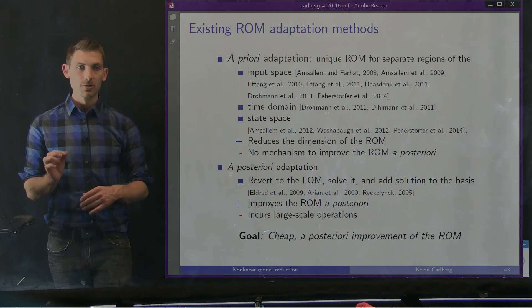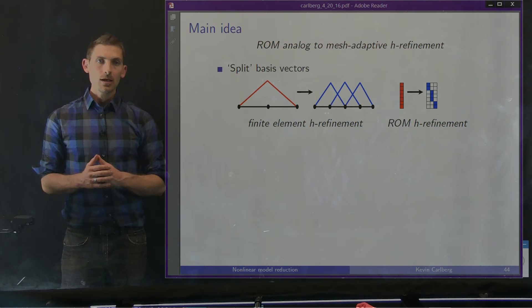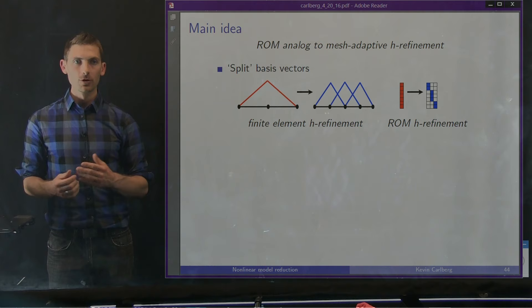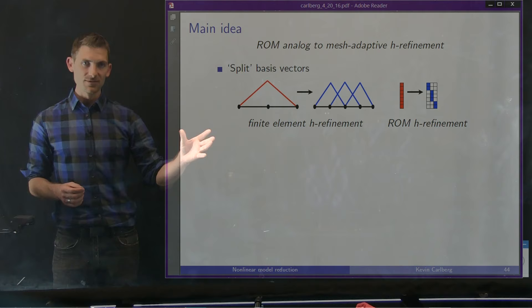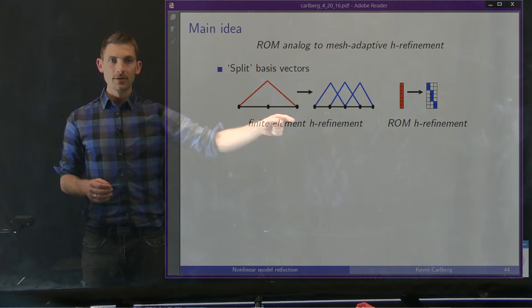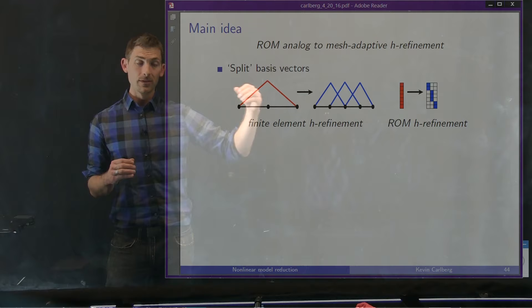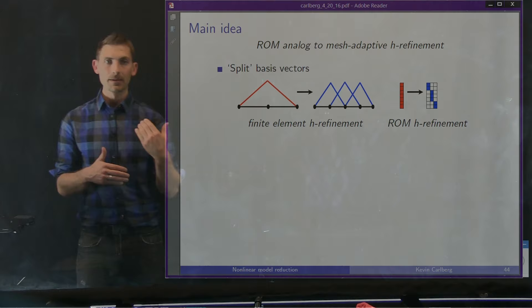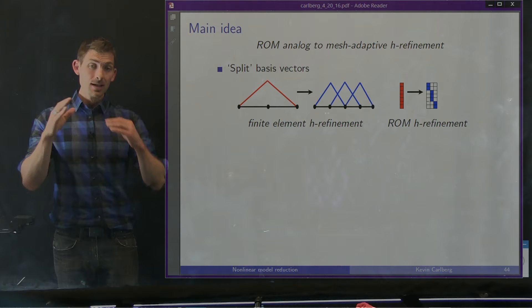Our goal is to devise a cheap mechanism to improve or refine the reduced order model a posteriori. The main idea is a ROM analog to mesh-adaptive h-refinement. For p1 finite elements in one dimension, h-adaptation works by taking a given basis vector and splitting the support of that vector into multiple vectors with the same polynomial degree but distributed over multiple elements — a way to think about finite element h-refinement.